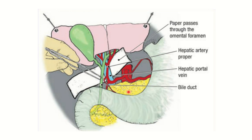Here is another very important picture of the epiploic foramen, or foramen of Winslow, because questions from this topic appear in different years of the MRCS exam. Several pictures are included to make the concepts very clear. We can see the common bile duct, and just behind it is the hepatic artery — specifically the hepatic artery proper — which arises from the common hepatic artery.